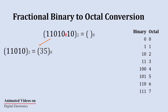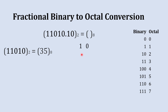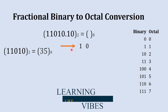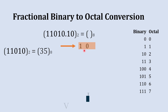The whole number part has been converted. Now it's time for the fractional number part, which is .0 1 0. We write this 0 1 0 separately and start from the left side, creating a group of three digits. We only have two digits, so we need to add one more zero on the right-hand side.